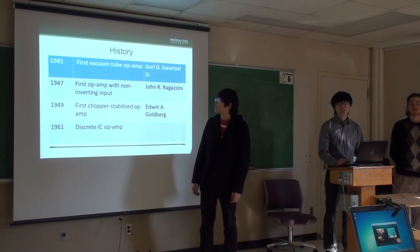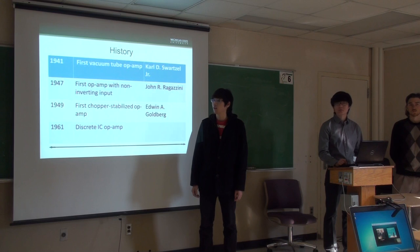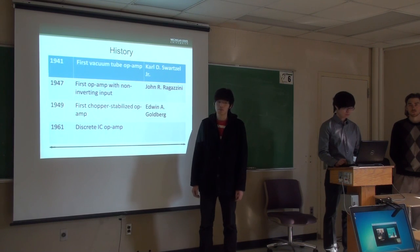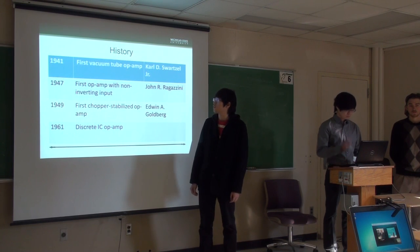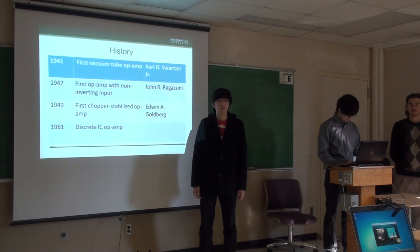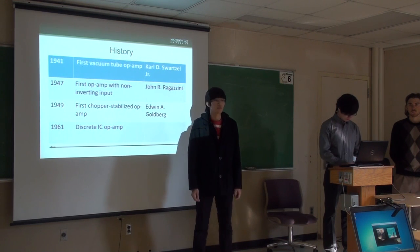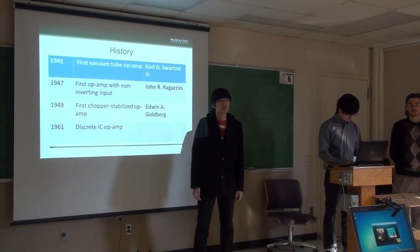The first vacuum-tube op-amp came out in 1940. Op-amp was defined as DC-coupled, general-purpose, high-gain. An inverting amplifier was first found in a U.S. patent as a submarine amplifier, and that was followed by Karl Schwarzer in 1941.